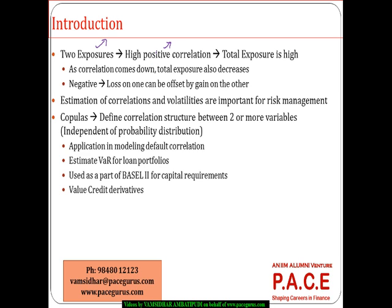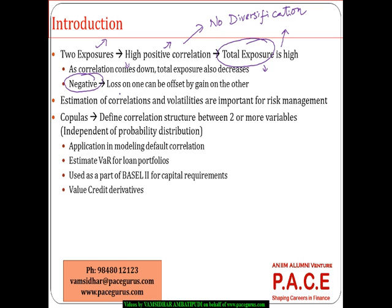If correlation is very high positive, there is no diversification effect. If one exposure leads to a loss, there is a good chance the other one also triggers a loss, meaning the total exposure is going to be phenomenally higher. But if correlation comes down, the exposure and risk also come down. When correlation goes negative, the loss on one exposure can be offset through the gain on the other.